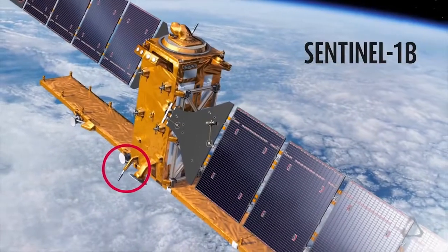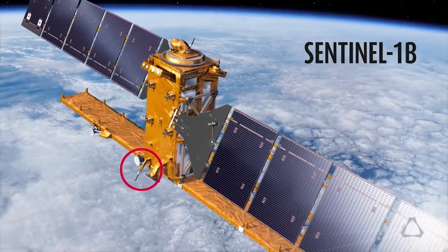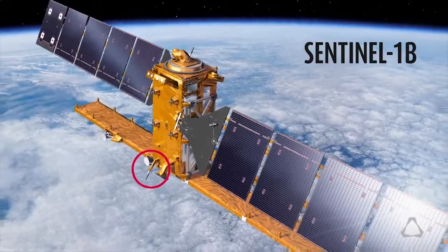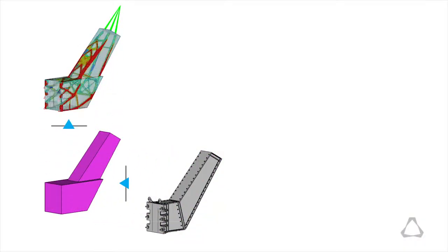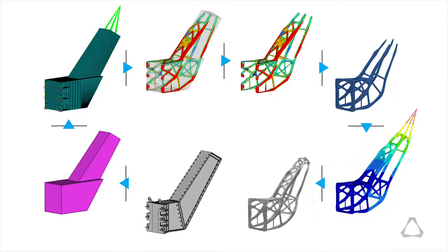The application is Sentinel-1B, an Earth observation satellite from the European Space Agency. The support that we have redesigned is an antenna support for remote control of the satellite.